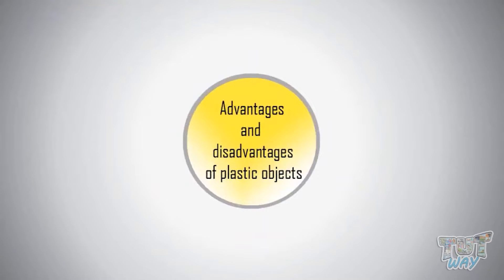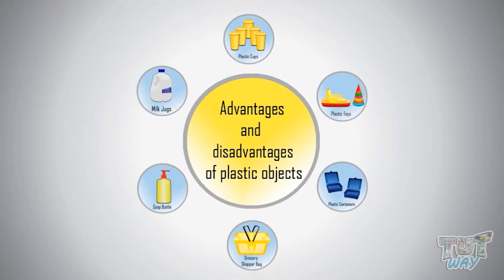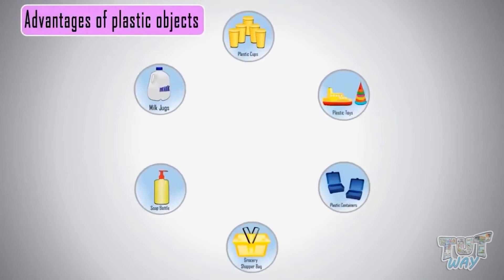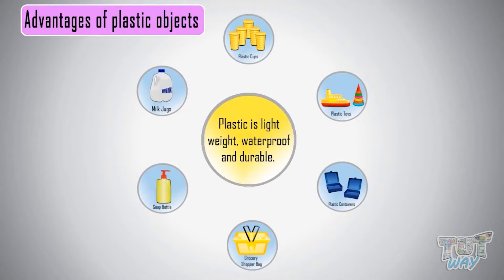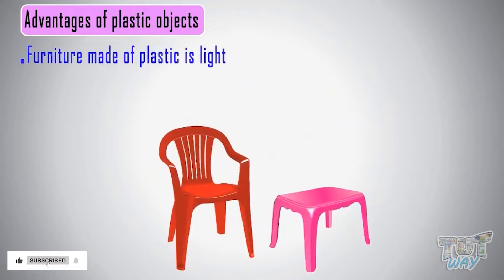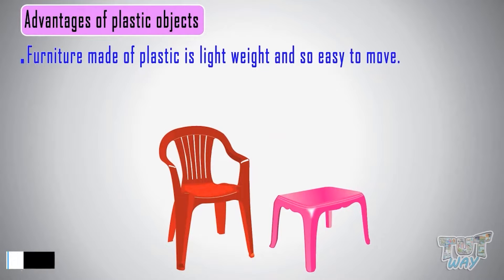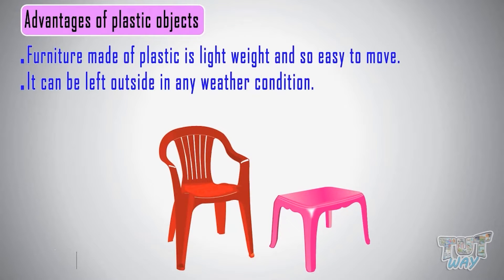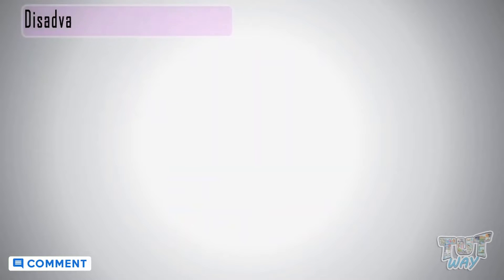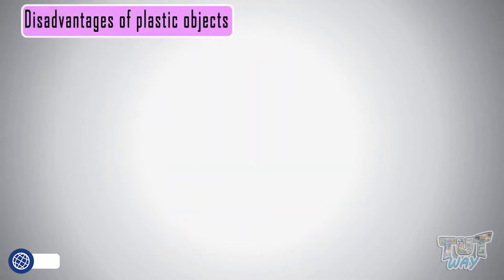Let's see some advantages and disadvantages of plastic objects. First, the advantages: plastic material is lightweight, waterproof, and durable. Furniture made of plastic is lightweight and easy to move. It can be left outside in any weather condition and lasts for many years.